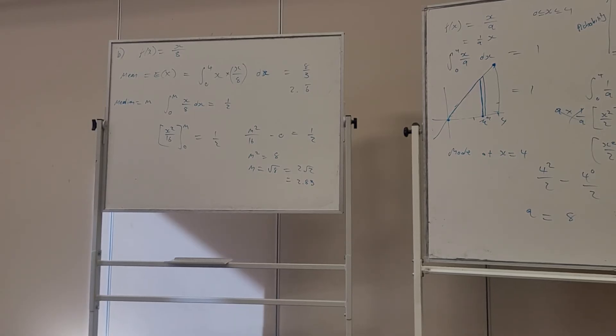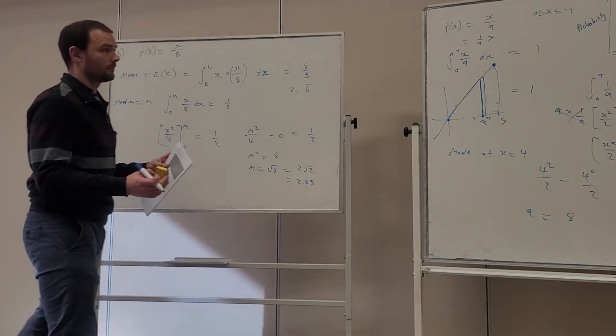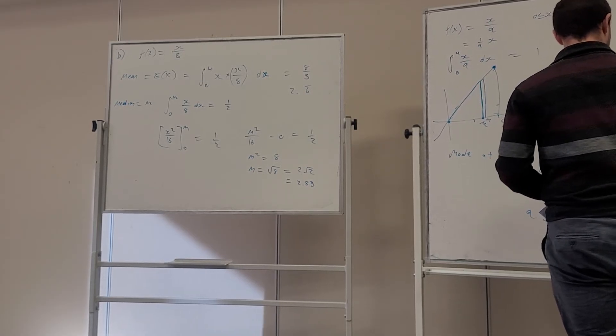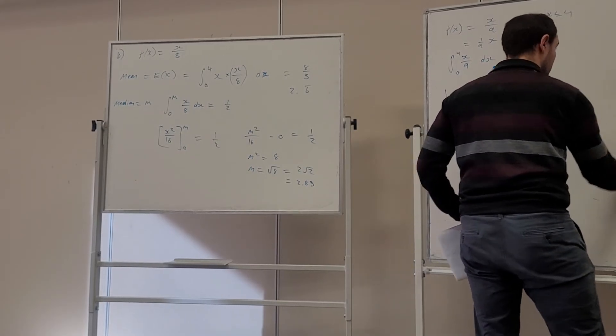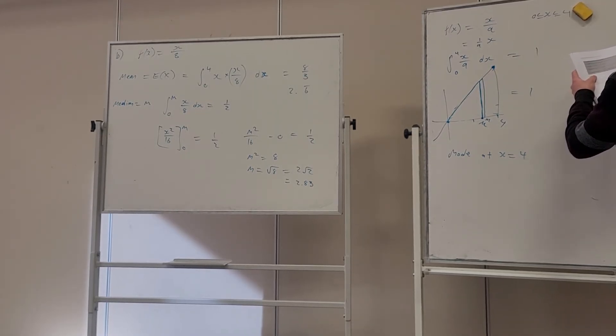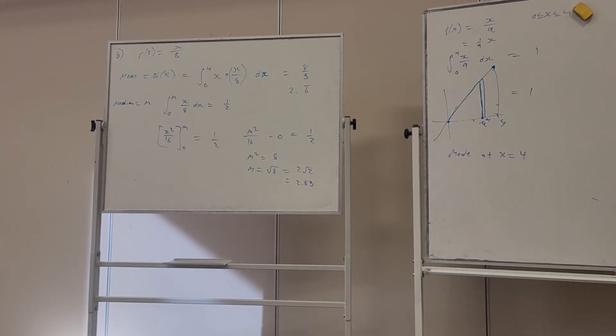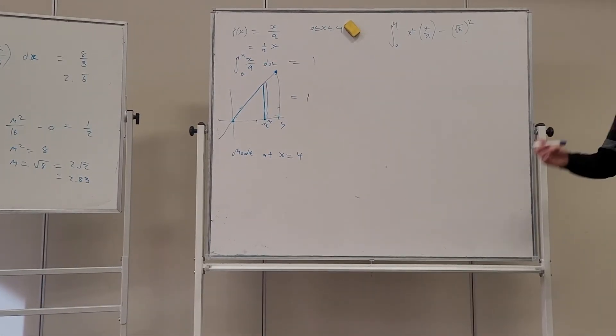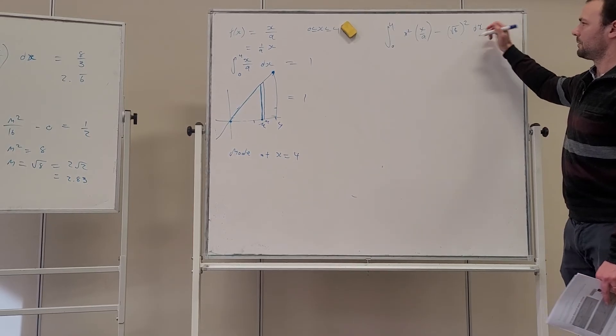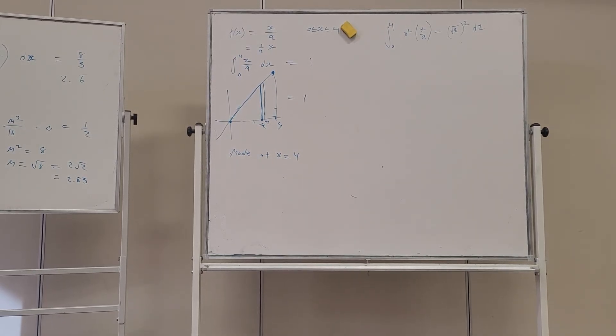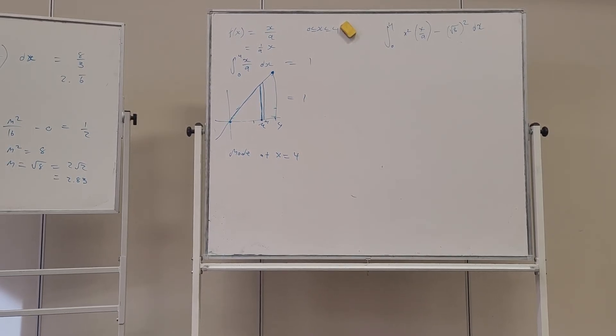Alright, now I'll find the variance and standard deviation. So we'll do the variance first, and then we'll perform the square root of it. So it might come up here. Variance is the integral from 0 to 4 of x squared times x on 8, and take away the mean squared. Now, mean is the square root of 8, or 2 root 2, or 2.83, and all of that with regards to x. So that's the integral that we're going to perform. That's going to be our variance. And you'll see there's two formulas there for the variance. Either will give you the same solution.